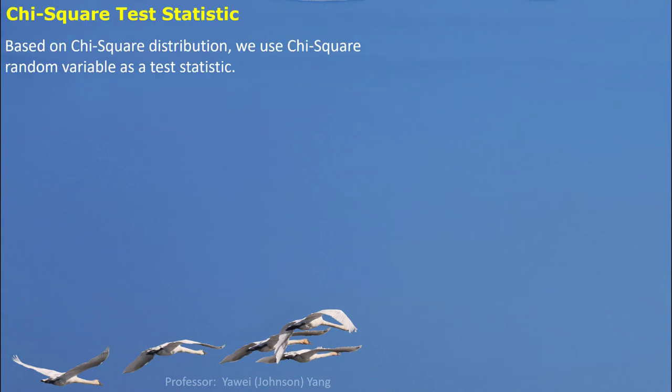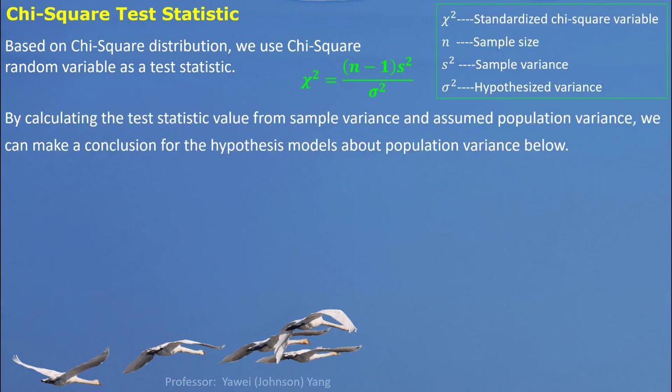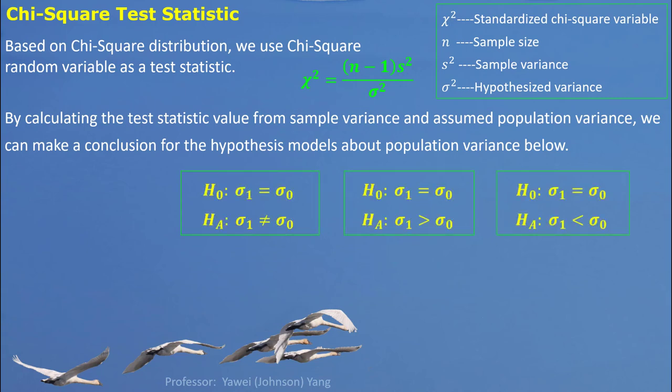Based on this chi-square distribution, we can use the chi-square random variable as a test statistic. By calculating the test statistic value from sample variance and assumed population variance — sometimes called the null hypothesis — we can make a conclusion about the hypothesis model for population variance. Typically, we have three possible models: a two-sided model where the null hypothesis is that population standard deviation equals a specific value, or two kinds of one-sided models testing only the positive or negative side.